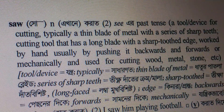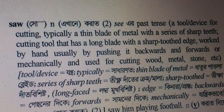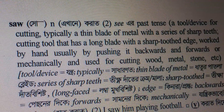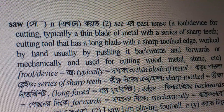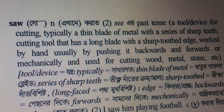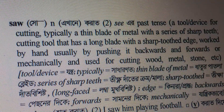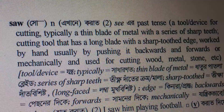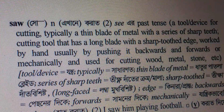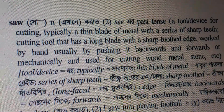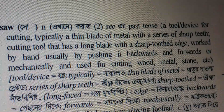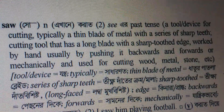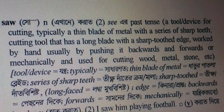A tool or device for cutting, typically a thin blade of metal with a series of sharp teeth. The definition is a cutting tool that has a long blade with a sharp toothed edge. Worked by hand, usually by pushing it backwards and forwards, or mechanically, and used for cutting wood, metal, stone, etc.